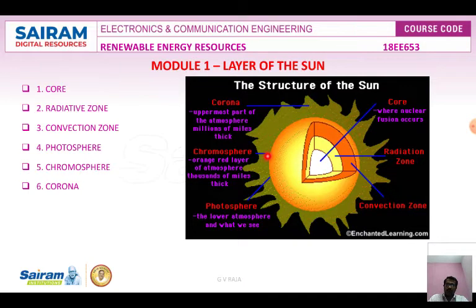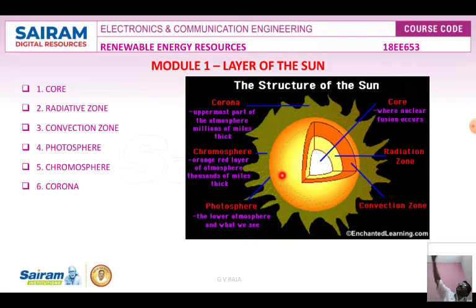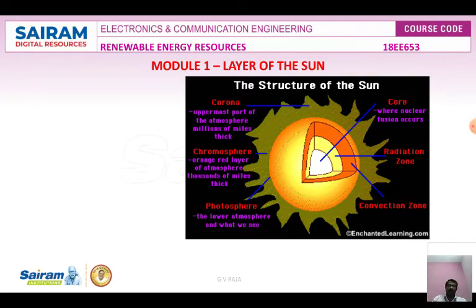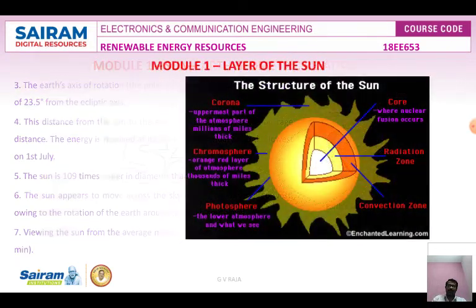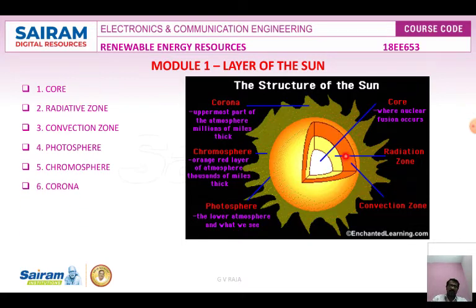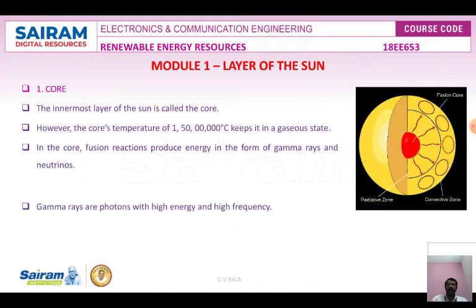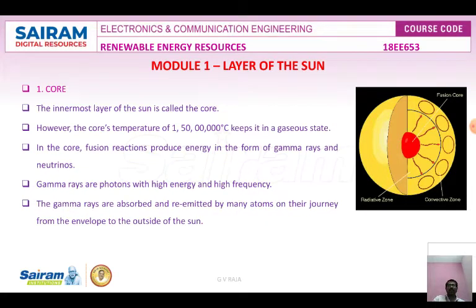The next layer inside the corona is the chromosphere — an orange-red colored atmosphere thousands of miles thick. Inside that is the photosphere layer, the lower atmosphere — the yellowish color seen in the morning or evening sky. Then internally there is the convection zone, then the radiation zone, and at the very center is the core. So the six layers of the sun are: core, radiative zone, convection zone, photosphere, chromosphere, and corona.